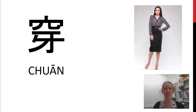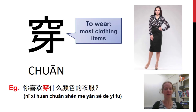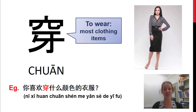First word: 穿. This actually means to wear, so this is a verb — to wear something. And this applies to most clothing items like shirts, tops, skirts, and pants.